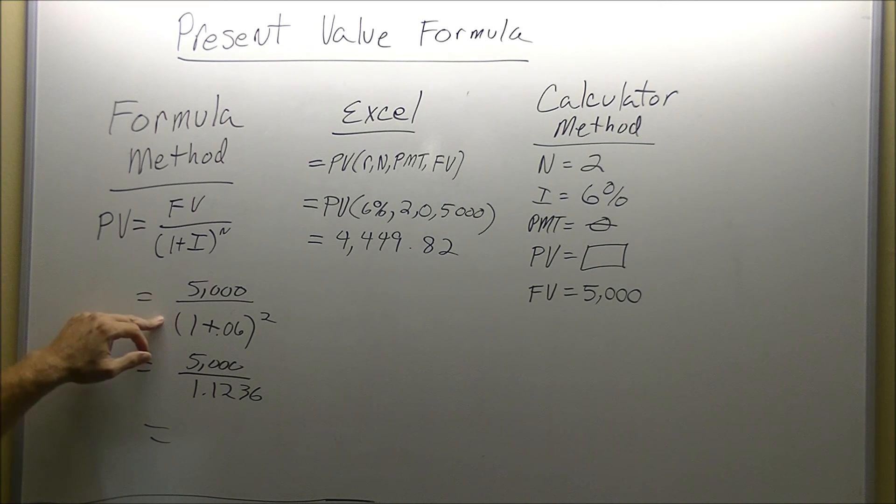Again, all we do is follow the order of operations, 1 plus .06, you do everything inside the parenthesis, will give us 1.06, raised to the 2nd power, 1.06 times 1.06, gives us 1.1236.